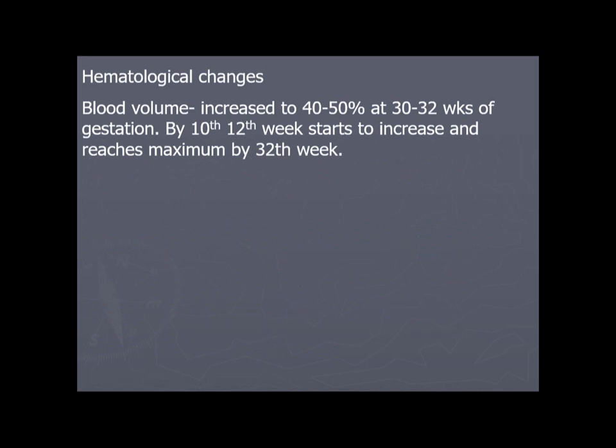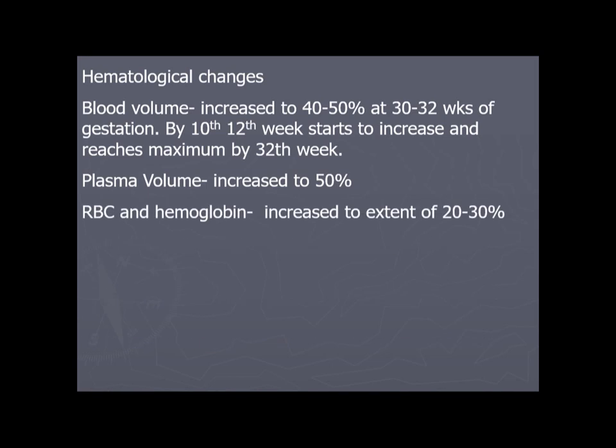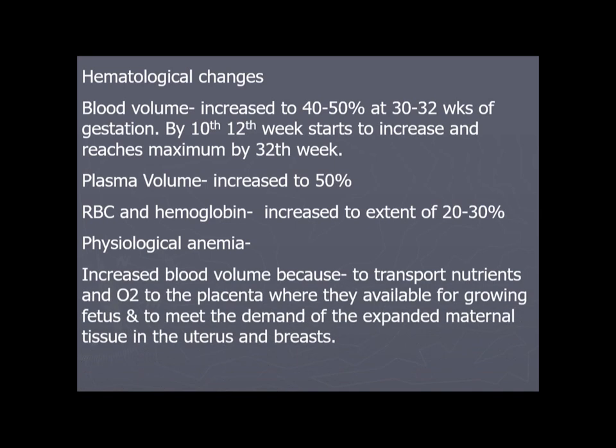Hematological changes: blood volume increases by 40–50% by 30–32 weeks of gestation, starting from the 10th–12th week. Plasma volume increases by 50%, while RBC and hemoglobin increase only 20–30%. This disproportionate increase — plasma volume up 50% but RBC only 30% — leads to hemodilution and physiological anemia of pregnancy.